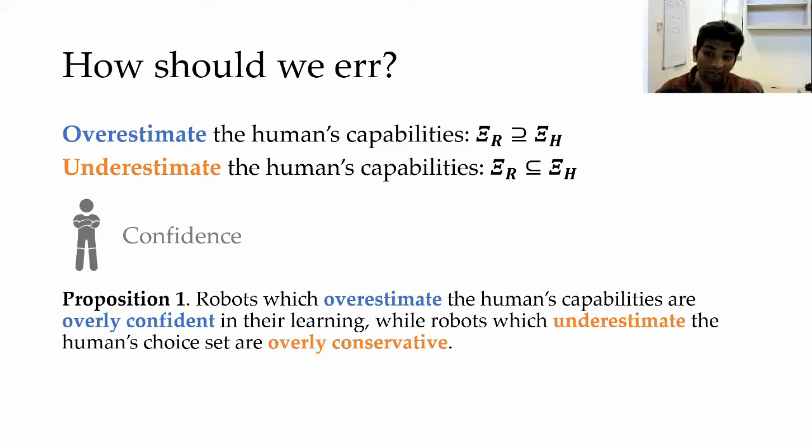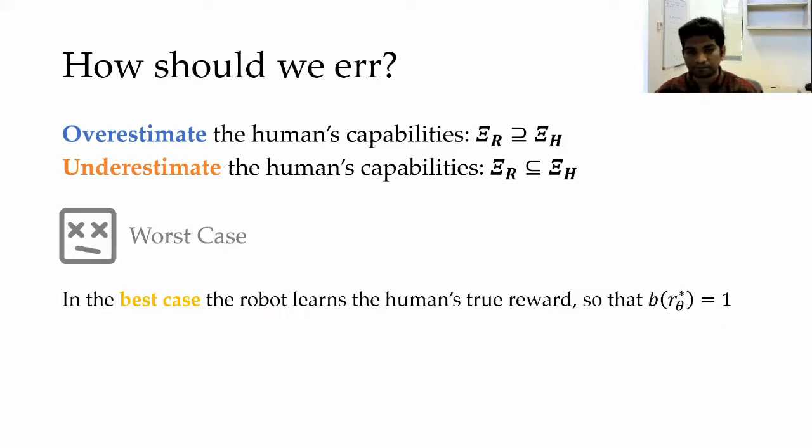On the other hand, robots that underestimate the human's capabilities will not be so quick to optimize for spilling. Here the robot realizes that the trajectory we have shown is our best choice for not spilling coffee. Hence the risk-averse robot will think that both spilling coffee and not spilling coffee are still likely. In terms of confidence, what we see is that underestimating the human's choice set is better if you want robots to learn from imperfect demonstrations.